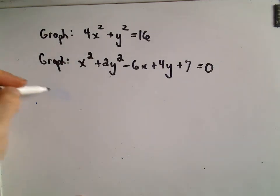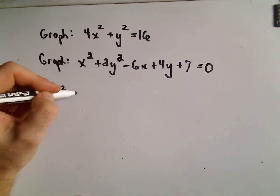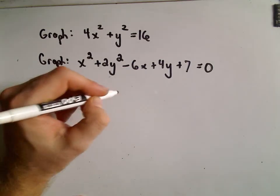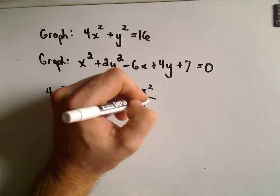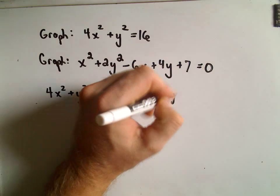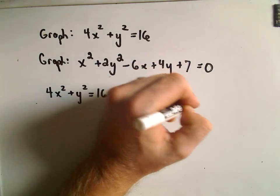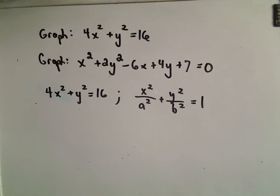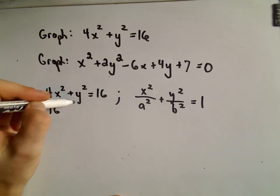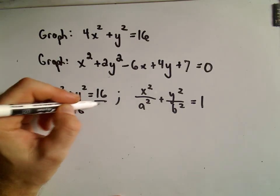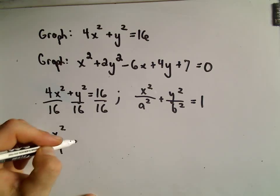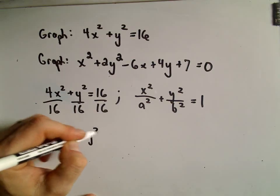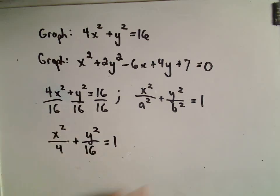Let's graph 4x squared plus y squared equals 16. The standard form was x squared over a squared plus y squared over b squared, and we wanted the number on the right to equal 1. So the first thing I'm going to do is divide everything by 16 to turn it into standard form. We'll get x squared over 4 plus y squared over 16 equals 1.